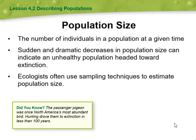Hello my dear students and welcome to this week's overview. During this week we're going to talk about population size. Technically, population size means the number of individuals in a population at a given time. Sudden and dramatic decreases in population size can indicate an unhealthy population headed toward extinction. Ecologists often use sampling techniques to estimate population size.